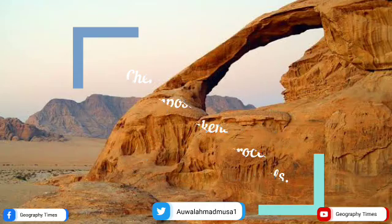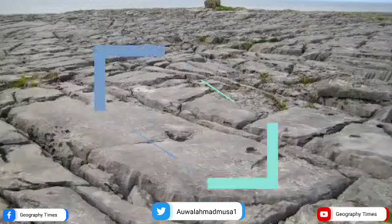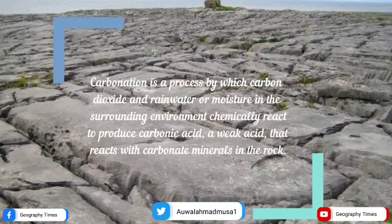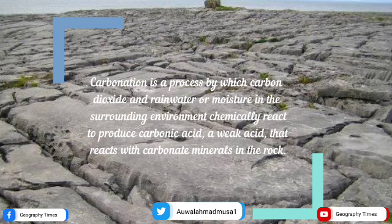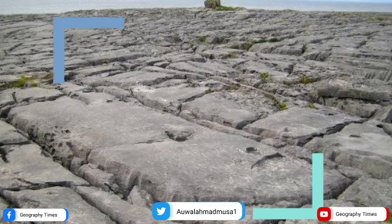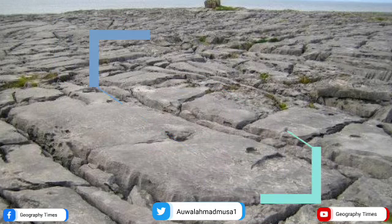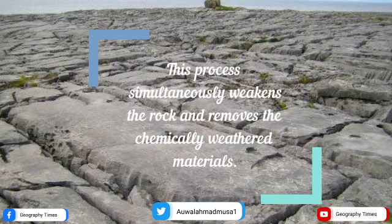This includes carbonation. Carbonation is a process by which carbon dioxide and rainwater or moisture in the surrounding environment chemically react to produce carbonic acid, a weak acid, that reacts with carbonate minerals in the rock. This process simultaneously weakens the rock and removes the chemically weathered materials.